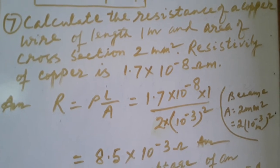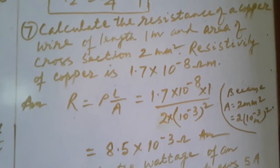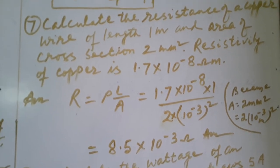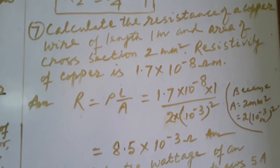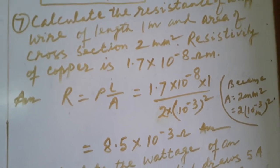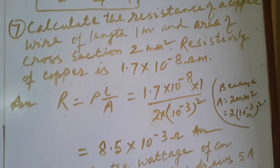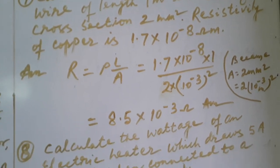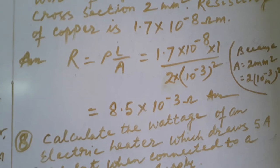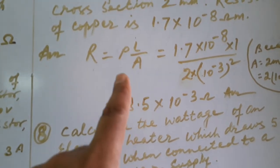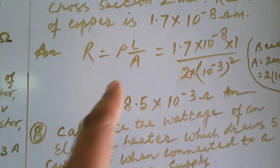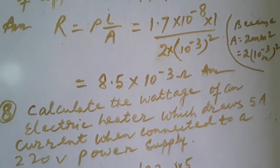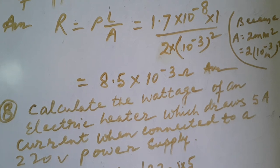This is a simple question, but you will have to change area 2 millimeter square into square meter. You will have to convert millimeter into meter, millimeter square into meter square. Then you can use the formula R equal to rho L by A, where rho is the resistivity, L length and A is the area of cross section. Putting the value, you will get resistance equal to 8.5 into 10 power minus 3 ohm.